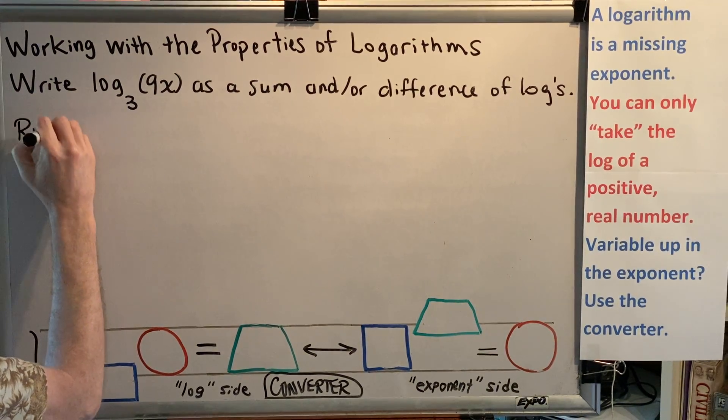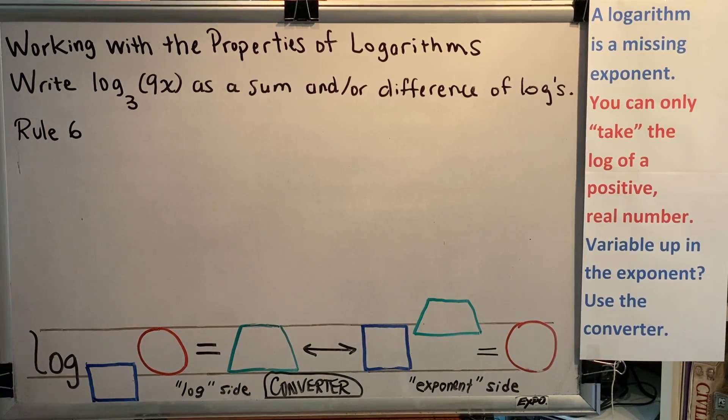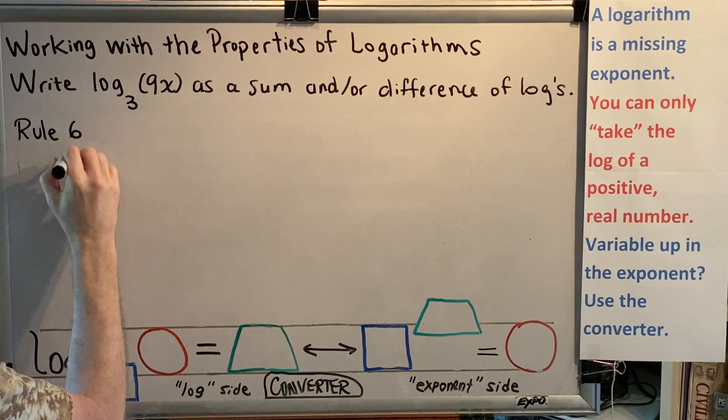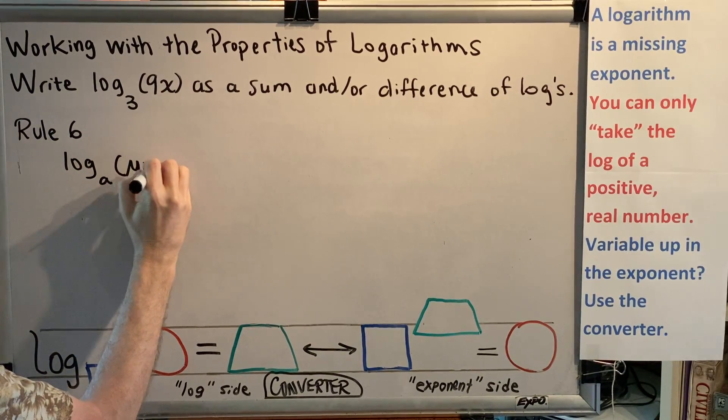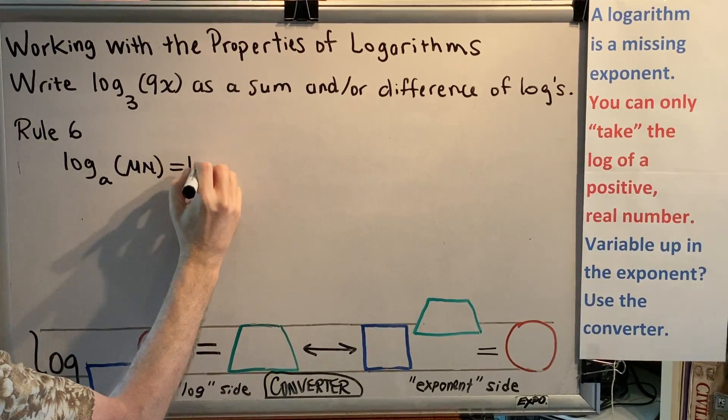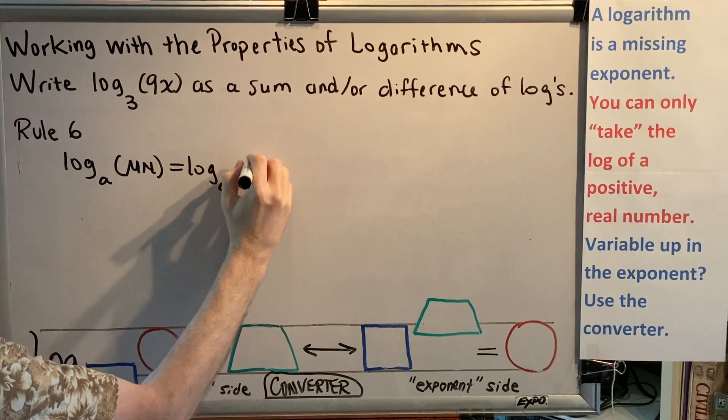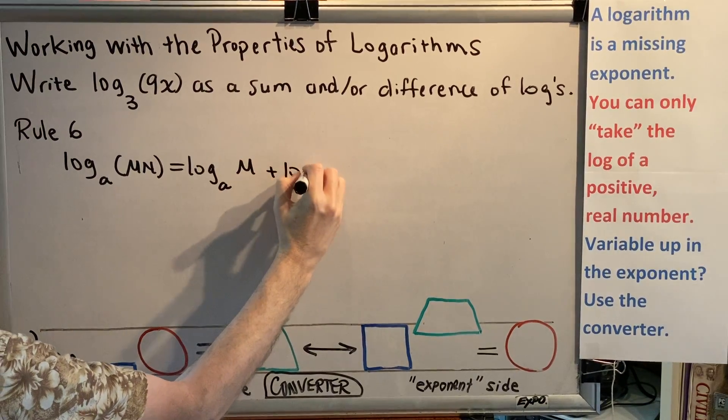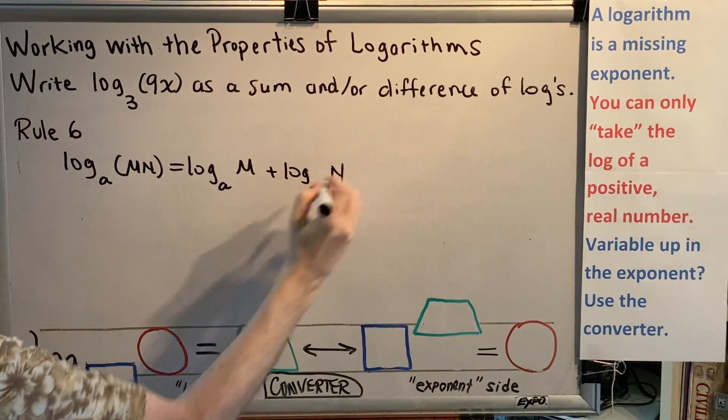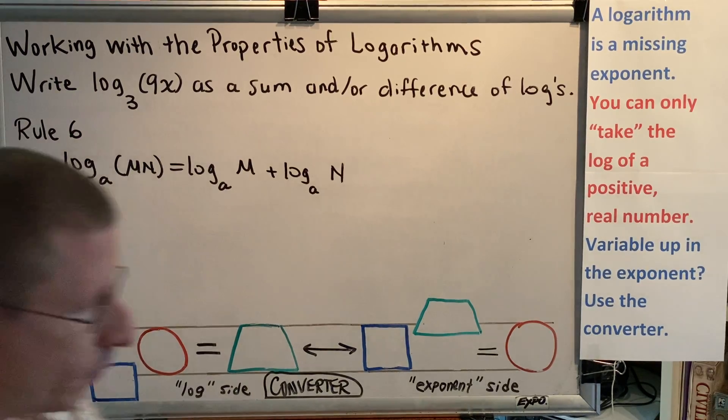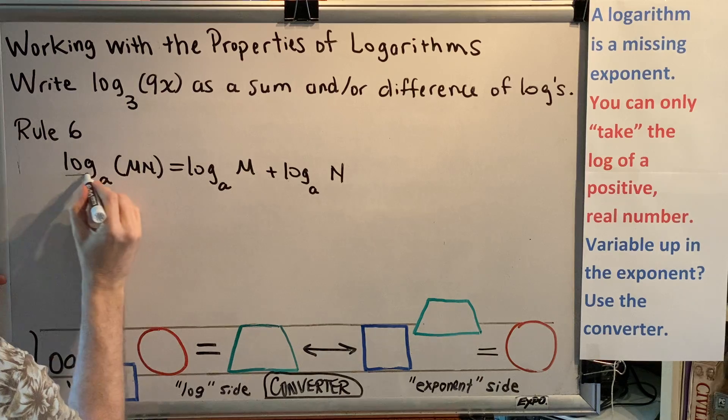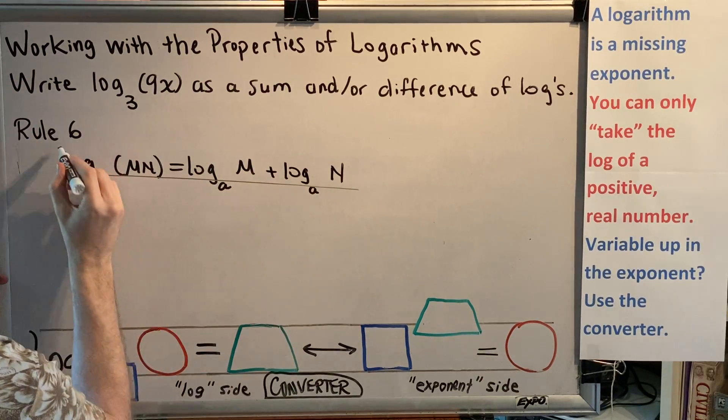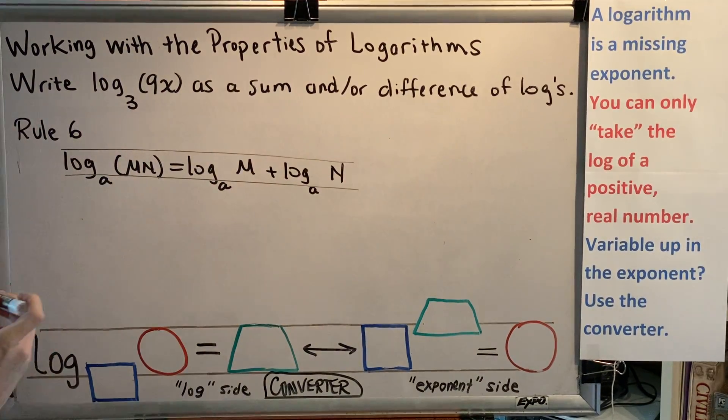Rule 6 says log base a of the product mn equals log base a of m plus log base a of n. And now seems like a good time to remind you that when you write logarithms, you always want to make sure that you're putting everything on the appropriate line or below the line or above the line.